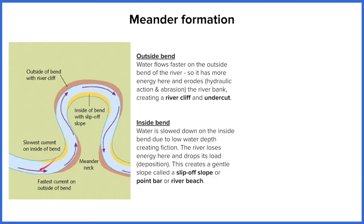The outside bend has the most energy because it's easier for water to travel at high speeds there — there's a greater distance to make that bend. On the inside bend, the water has to slow down to make the turn. As the water collides with the edge of the channel, hydraulic action and abrasion start to create an undercut which eventually erodes away the land in what's called the meander neck — the land between the two river channels.